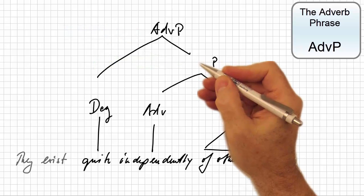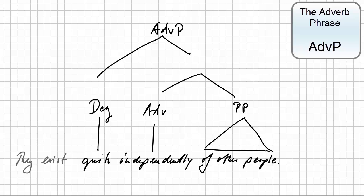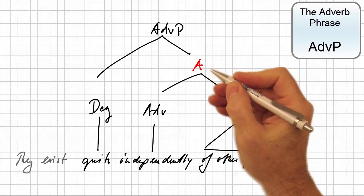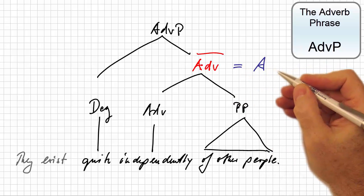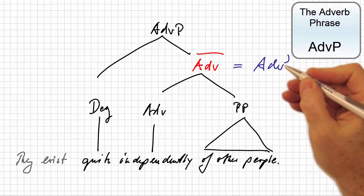And as suggested by Chomsky in 1970, we refer to the internal one as adverb bar, which today is more conveniently spelled as adverb with an apostrophe.